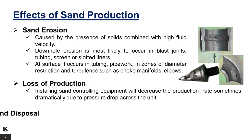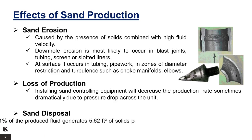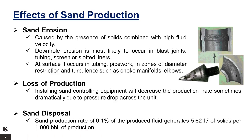Sand disposal is a common problem in fields producing from unconsolidated sands. A sand production rate of 0.1% of the produced fluid would generate 5.62 cubic feet of solids per 1,000 barrels of production. This would represent a significant problem on an offshore platform producing several thousands of barrels daily. Environmental concerns require that any oil be separated from the solids before disposal overboard, or that the sand be transported to shore for disposal.